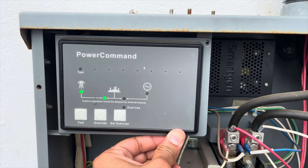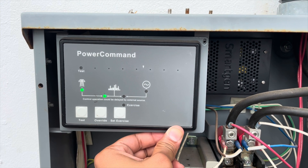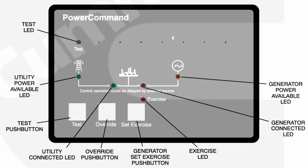Today we'll be configuring a Power Command controller of a Cummins RSS100 automatic transfer switch. Before we start messing with these functions, I want to be clear: there are some functions that are satisfactory and should not be adjusted. If some of these functions are modified, the transfer switch may not operate correctly.